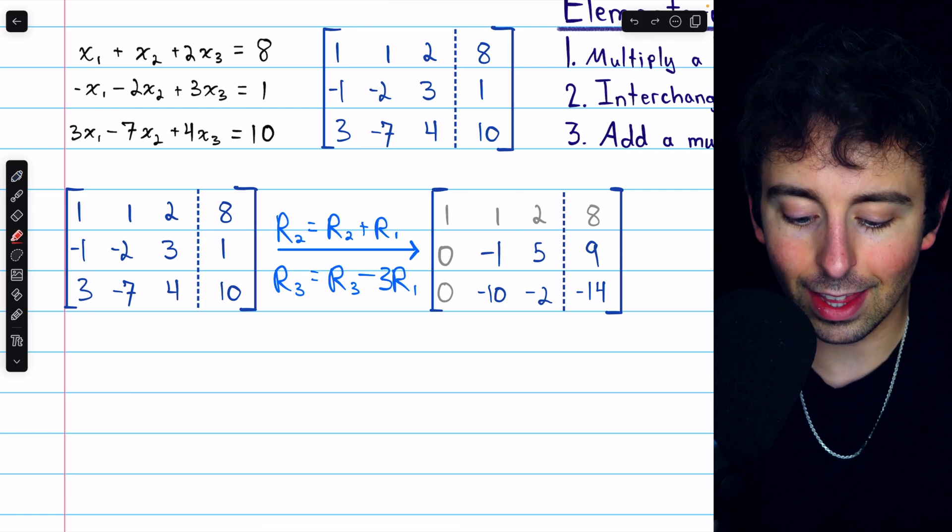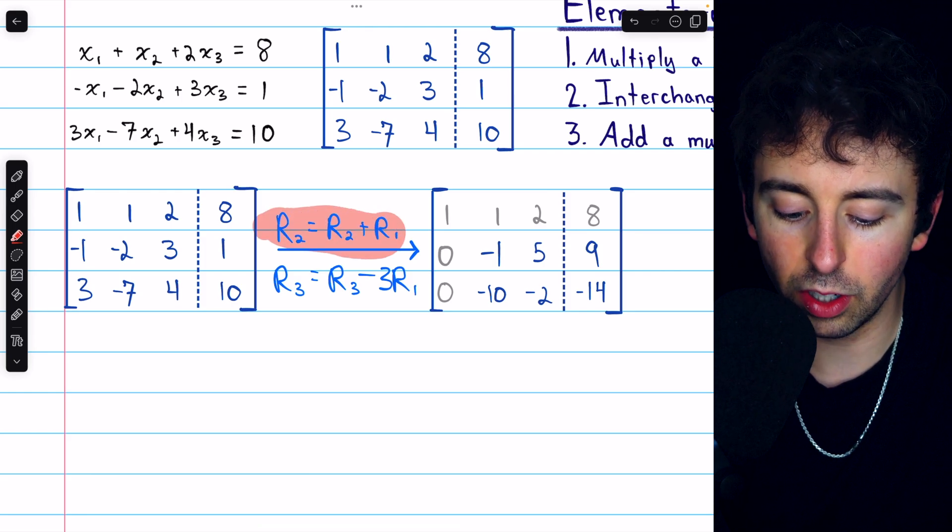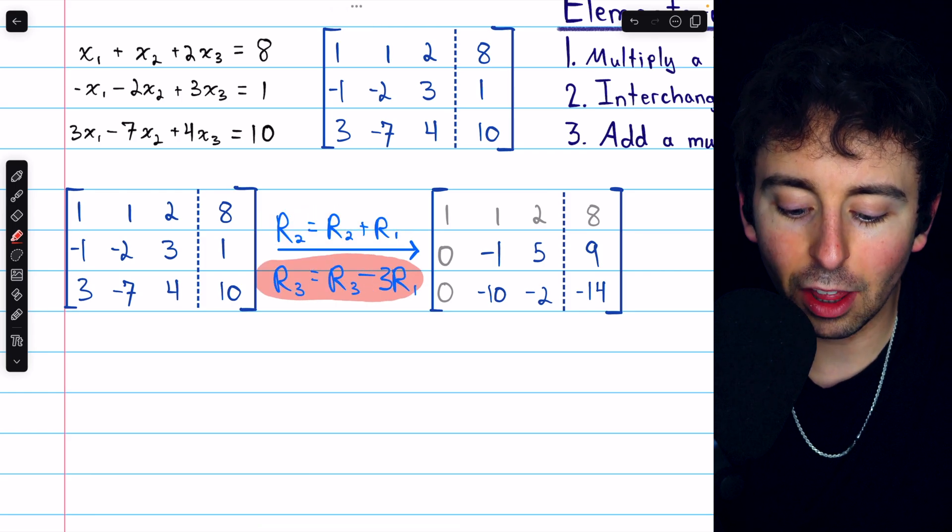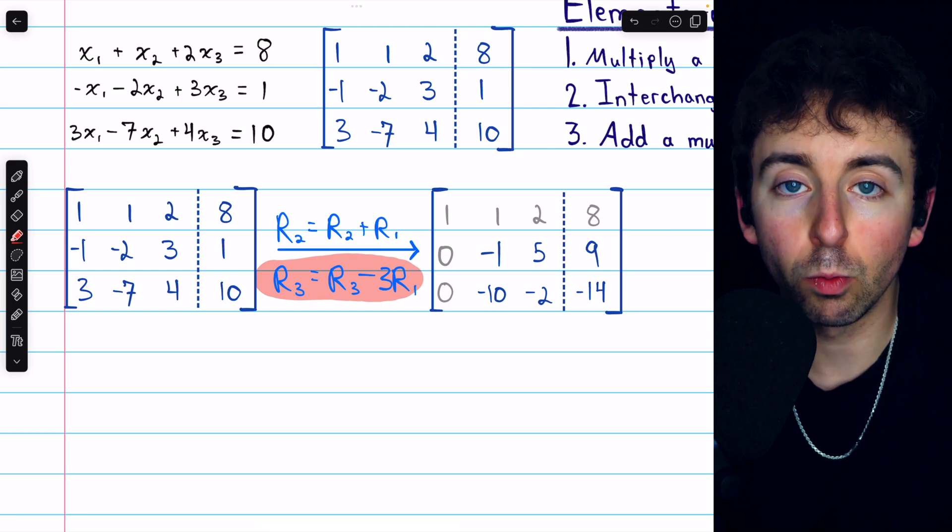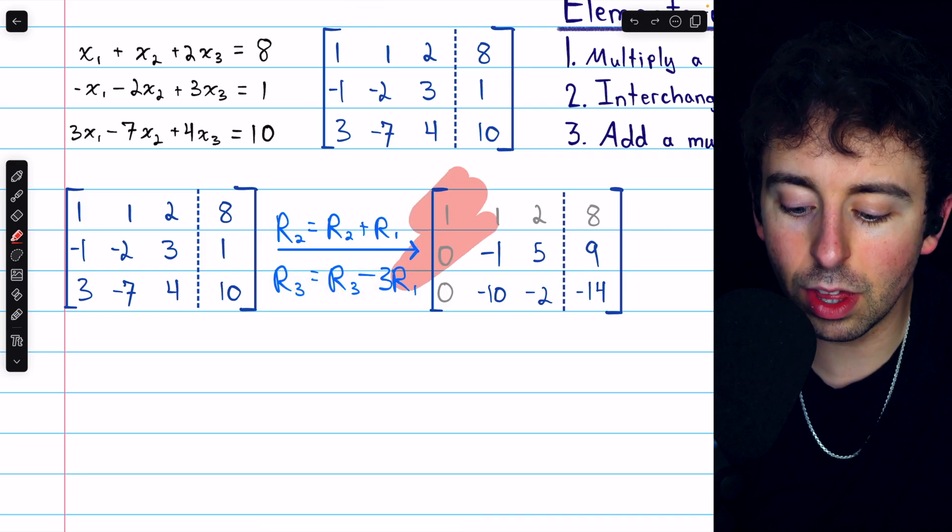So that looks like this. We're going to add row 1 to row 2, and we're going to subtract 3 row 1 from row 3, bringing us to this matrix.